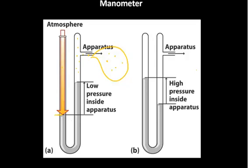But in this case, the level of the mercury is not equalized. On the apparatus side of the U-tube, the mercury level is higher than on the atmospheric side. That tells us that the pressure exerted by the atmosphere is greater than the pressure exerted by the gas inside the device.